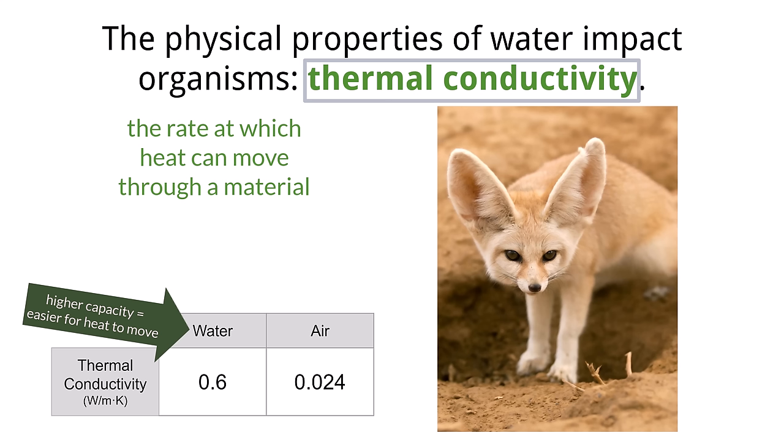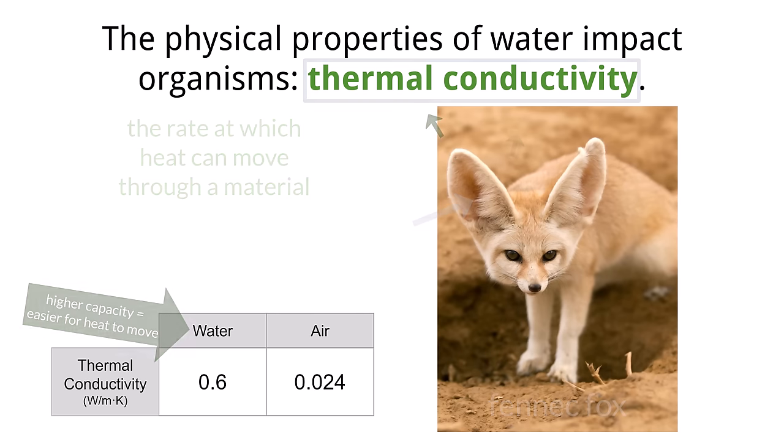An example of this can be seen with the fennec fox of North Africa. It has large ears that are loaded with blood vessels, helping it dissipate heat from blood to the exterior environment, allowing it to cool down on a hot day, along with obviously having a keen sense of hearing. The water-based solution of the blood helps radiate the heat from the vessels to the atmosphere.